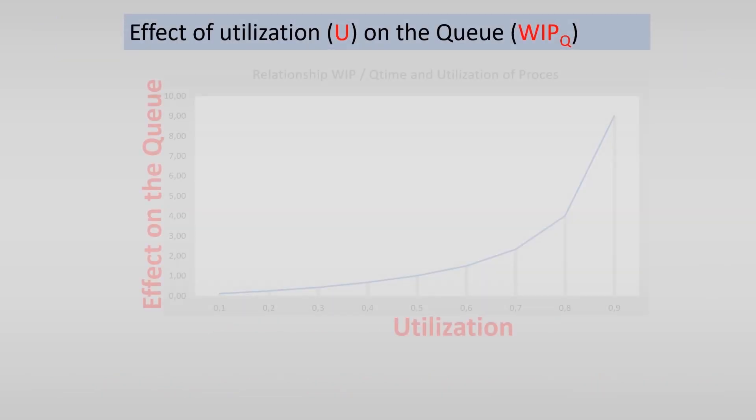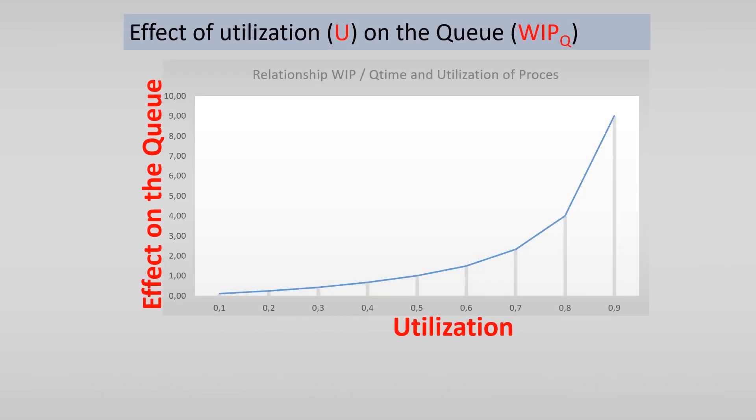Lots of measurements were done on utilization and the queue. And from these measurements, there is a relation between these two deducted. This relationship of this effect on the queue is shown in the following figure. We see a relationship that can be described by the formula u divided by 1 minus u.